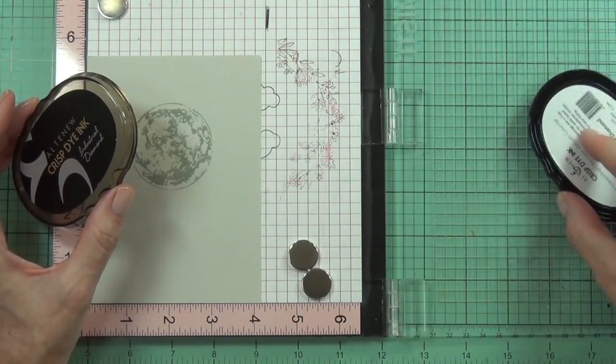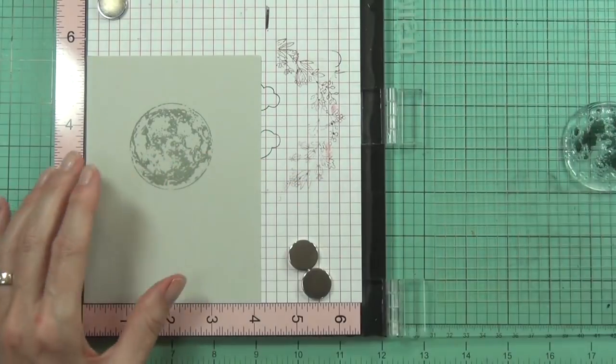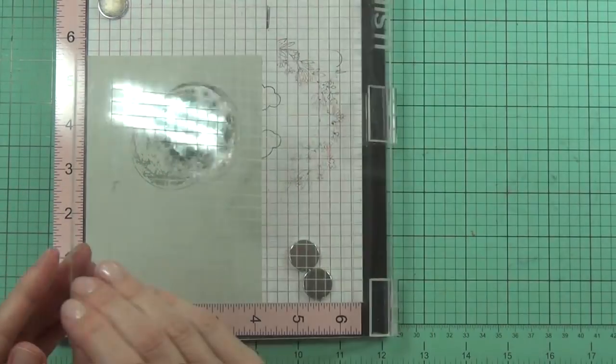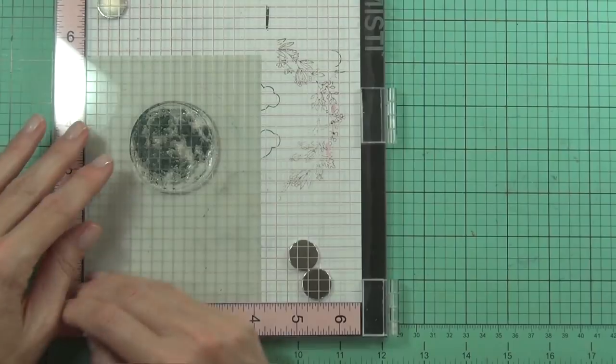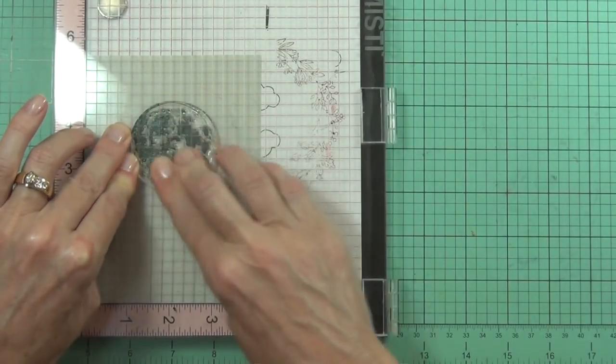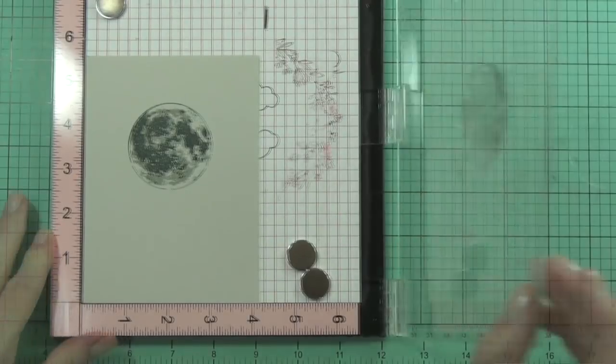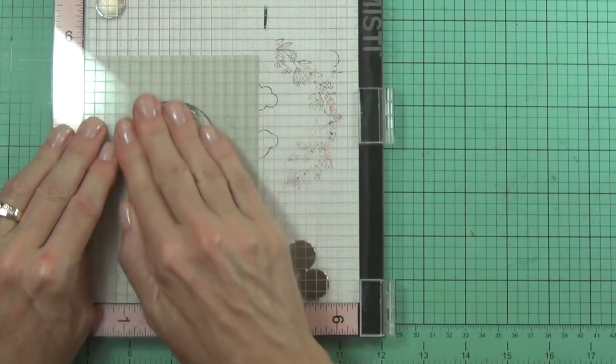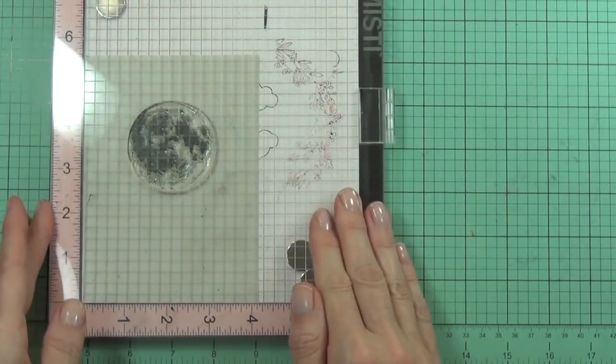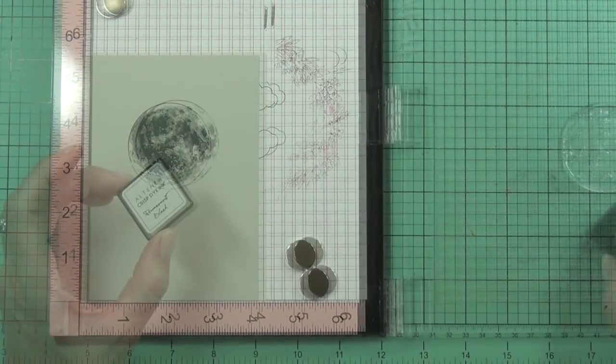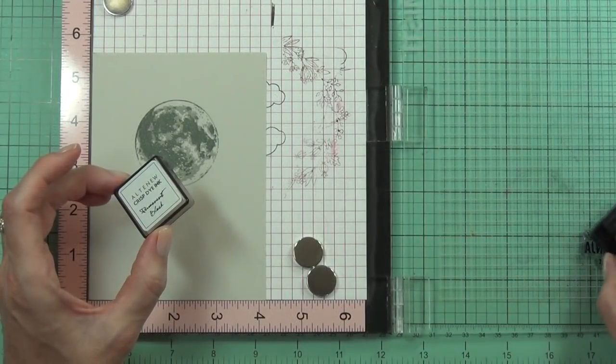Especially in the ninja cards because it's actually a new stamp set and I haven't used it much, so they haven't been conditioned very well yet. But the best thing about the Misti is you can re-stamp over your image and you know it's going to be in exactly the same spot.